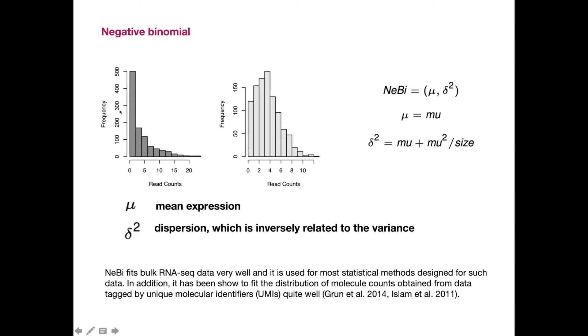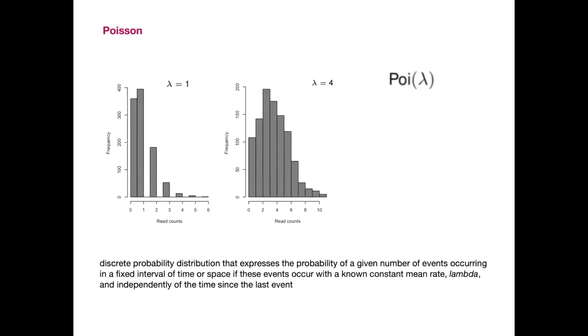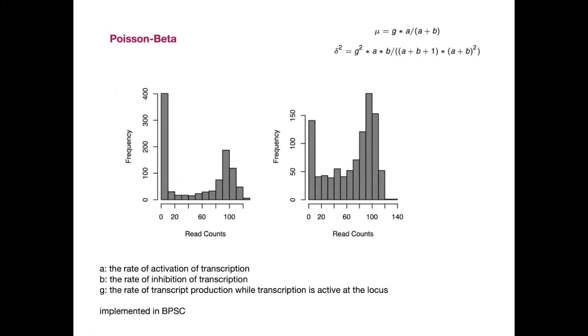Because by tweaking the negative binomial, we can get these very lowly expressed genes, but also the highly expressed genes. We can have the zero inflated negative binomial. So now we're getting even closer to what the single cell data looks like, or we can use the Poisson distribution or the Poisson-beta that can also capture these zeros in the single cell data.